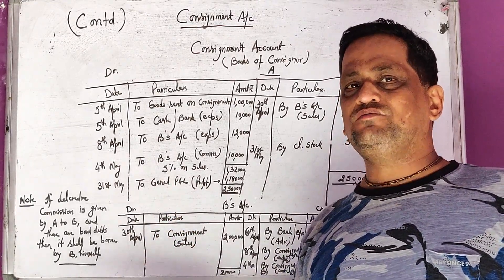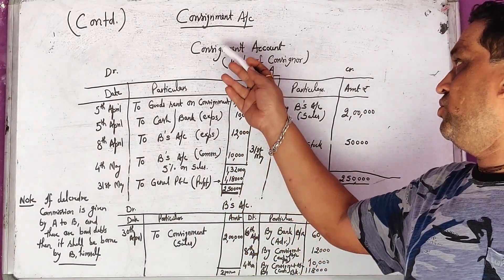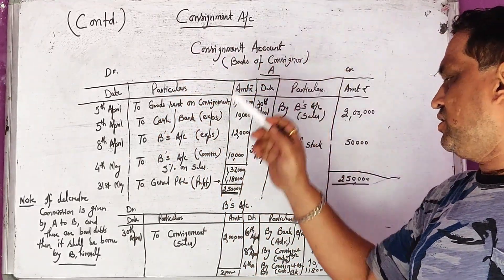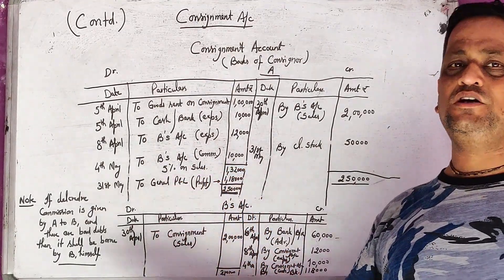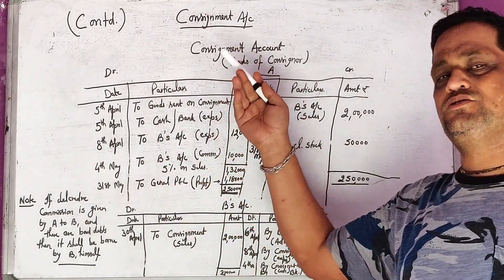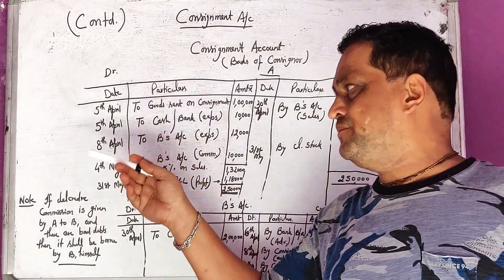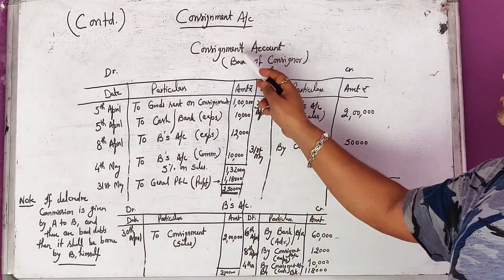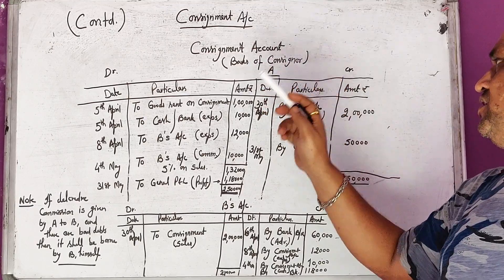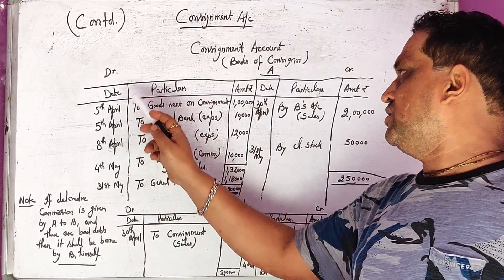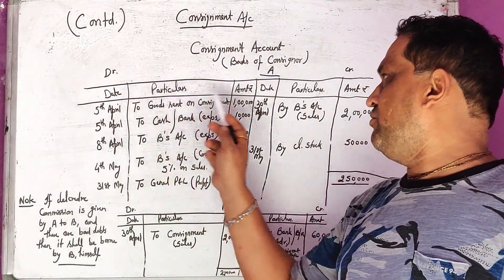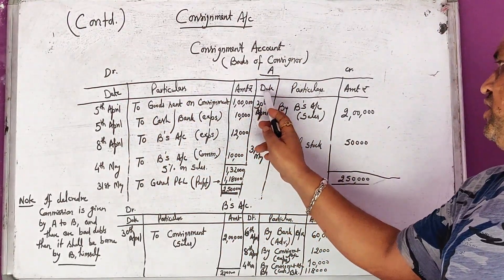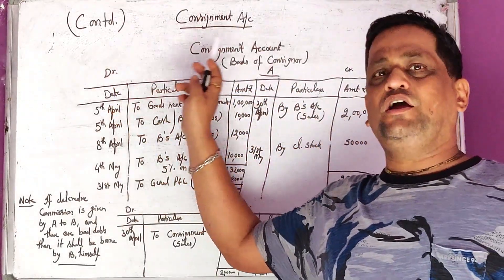The ledger accounts are in the form of consignment account and consignee's account. Sometimes we only prepare ledger accounts without passing journal entries, but sometimes journal entries are required too. We are now preparing the ledger account from the journal entries. These ledger accounts are maintained in the books of consignor A. The ledger format has date column, particulars column, amount, with debit and credit sides as in financial accounting.